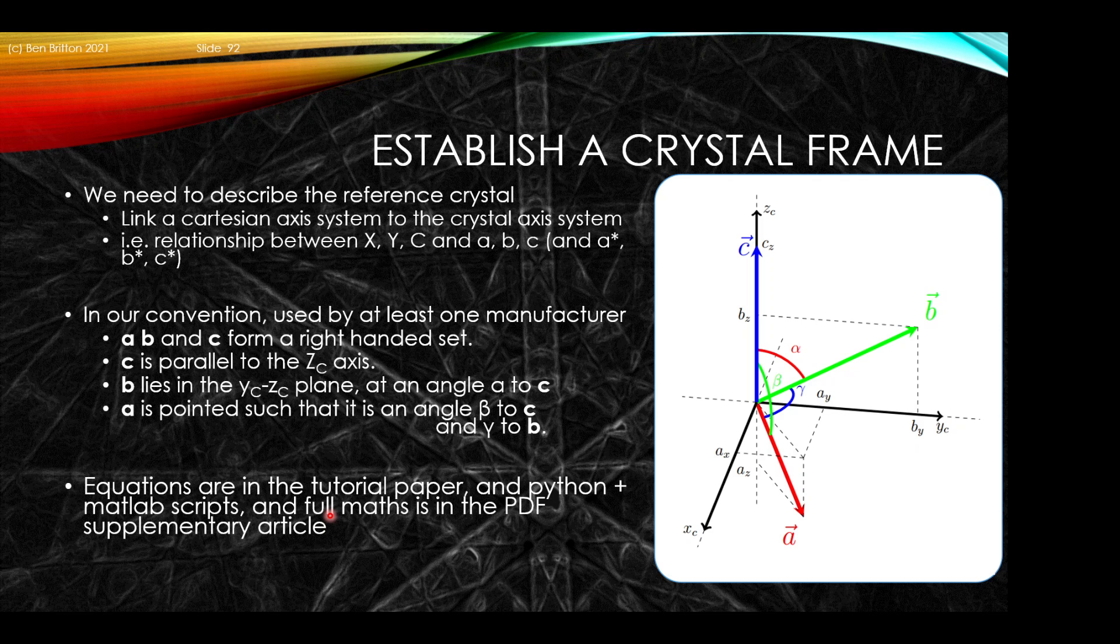There is a full description of the equations for this in the tutorial paper. The format is written in the PDF in the supplementary data, and there are Python and MATLAB scripts coded to construct what we call the structure matrix that does this conversion. Once we've established the crystal frame, that enables us to take a crystal described as A, B, and C and alpha, beta, gamma into a Cartesian set, and any vectors, crystal planes or otherwise, back and forth.